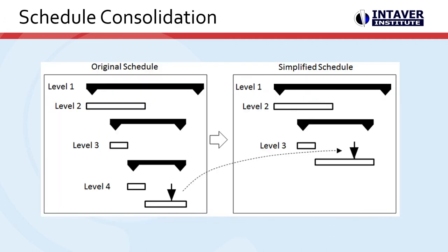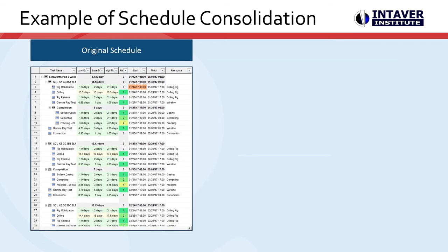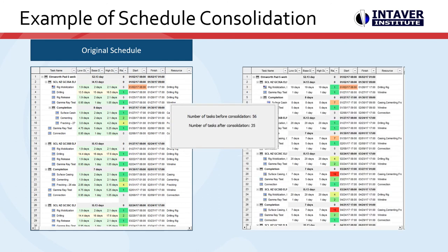Schedule consolidation uses a computer algorithm to combine sequential and/or similar repeated tasks while producing an equivalent schedule that preserves important schedule complexities and provides a valid analysis. Here we can see the results of a consolidation on this small schedule — there is over a 35% reduction in the number of tasks. This reduces the effort to create and manage your risk model over the life of your project.